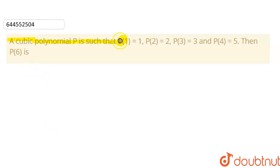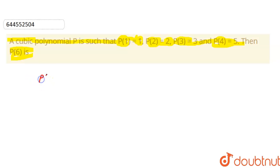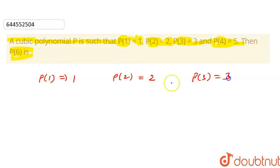The question is: a cubic polynomial p is such that p(1) = 1, p(2) = 2, p(3) = 3, and p(4) = 5. Then find p(6). So we have given that the polynomial at value 1 is 1, for 2 it is 2, for 3 it is 3, and for 4 it is 5.